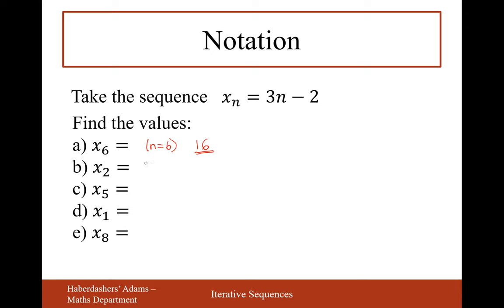In question B, n is 2. So 3 times 2 is 6, minus 2 is 4. In part C, n is 5: 3 times 5 is 15, minus 2 is 13. For x₁, n is 1: 3 times 1 is 3, minus 2 is 1. And for x₈, n is 8: 3 times 8 is 24, minus 2 is 22.